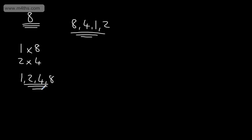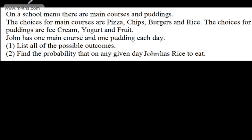Listing outcomes and sample spaces gives us a systematic way of listing all of the possible outcomes of an experiment. That's going to make our life slightly easier when we're calculating probabilities — looking at particular events and the probability of that event happening. So let's have a look at this question.